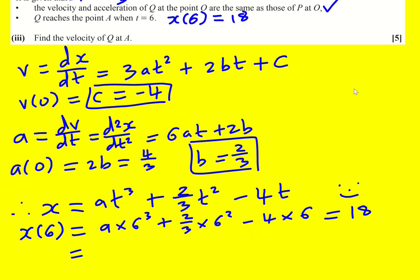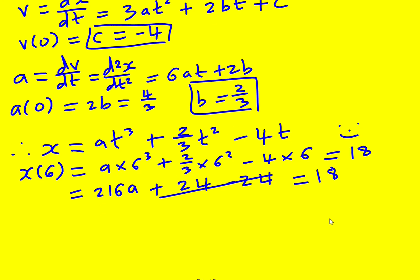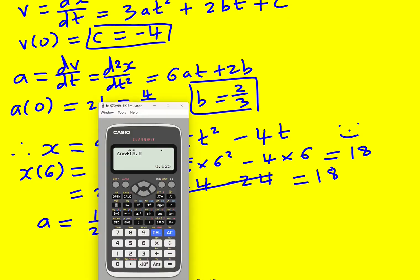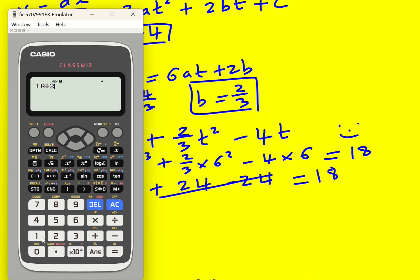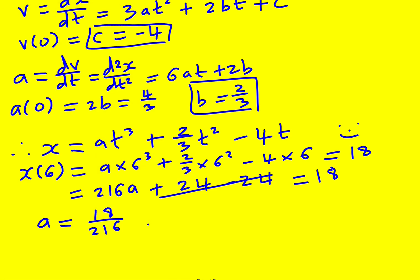You can use your calculator here. 6³ is 216, and two-thirds times 36 is 24, and minus 4 times 6 is minus 24, which handily cancels. So A equals 18 over 216, and 18 divided by 216 is 1 over 12. So X equals one-twelfth T³ plus two-thirds T² minus 4T.